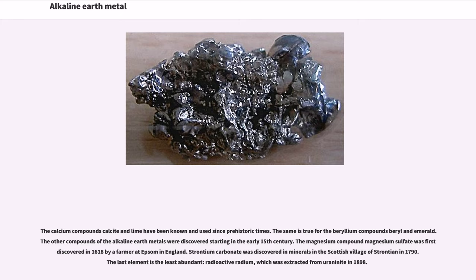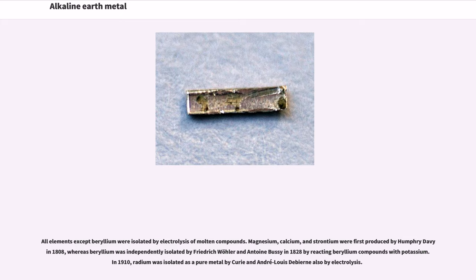The calcium compounds calcite and lime have been known and used since prehistoric times. The same is true for the beryllium compounds beryl and emerald. The other compounds of the alkaline earth metals were discovered starting in the early 15th century. The magnesium compound magnesium sulfate was first discovered in 1618 by a farmer at Epsom in England. Strontium carbonate was discovered in minerals in the Scottish village of Strontian in 1790. The last element is the least abundant, radioactive radium, which was extracted from uraninite in 1898.